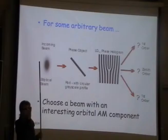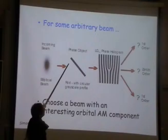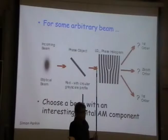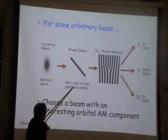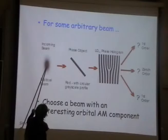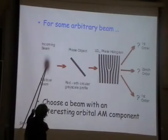Let us take an elliptical beam and put it onto a phase object in different positions. This rod has a circular grayscale profile. The light impinges on the phase object, the phase gets changed, so this beam will be modified. Then I put my detector — my hologram — and look at what the transmitted light tells me.